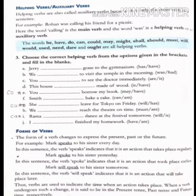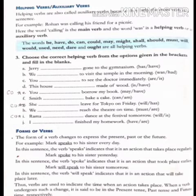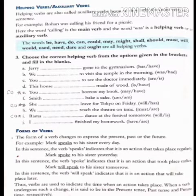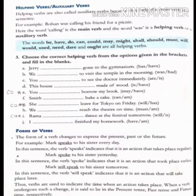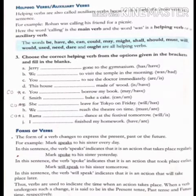Suppose we are taking an example. Rohan was calling his friend for a picnic. In this sentence, you know very well, Rohan is a subject or noun and here calling is the main verb. This is the action word and this is the main verb, and the word 'was' is a helping verb or we can say it's an auxiliary verb.